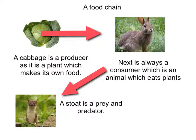A stoat is both a prey and a predator. A prey is an animal which gets eaten by another animal. A predator is an animal which eats another animal.